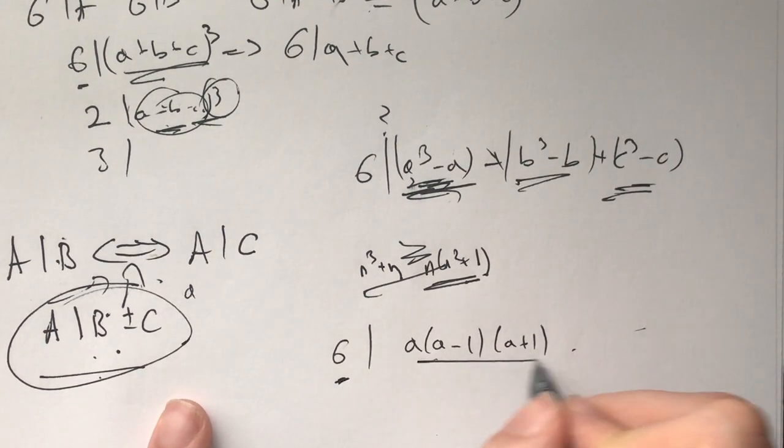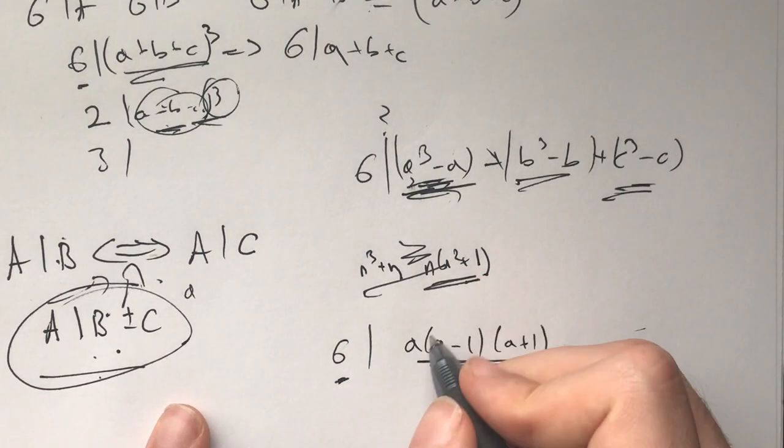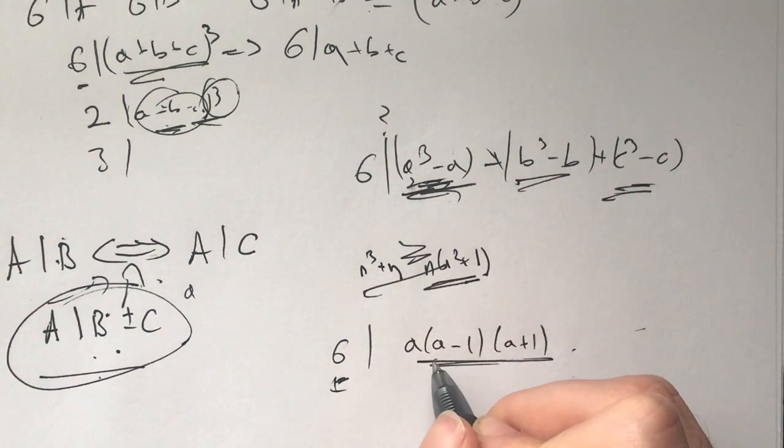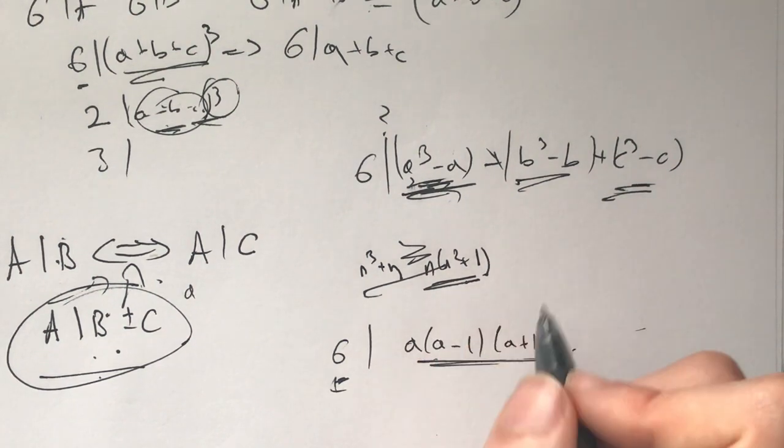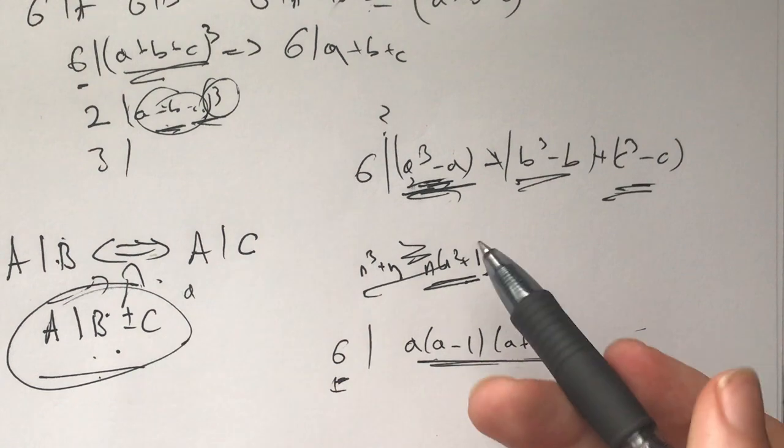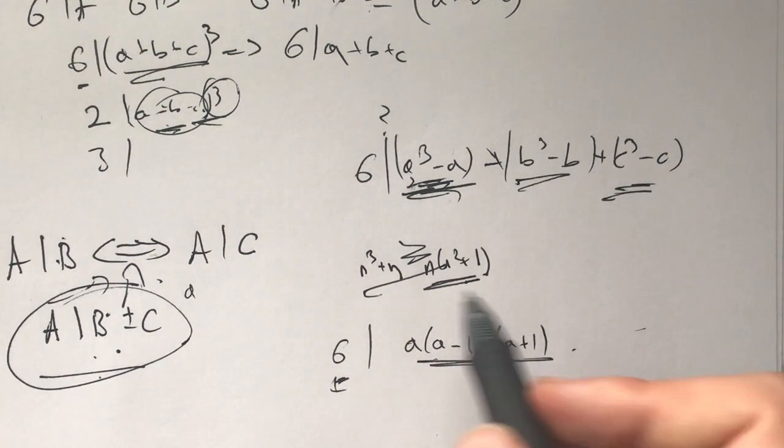But here, we're saying 6 divides this. Because these are, it's divisible by 2, because these are 3 consecutive integers multiplied together. So, 1 is divisible by 2, 1 by 3. And ergo, their whole product by 6.